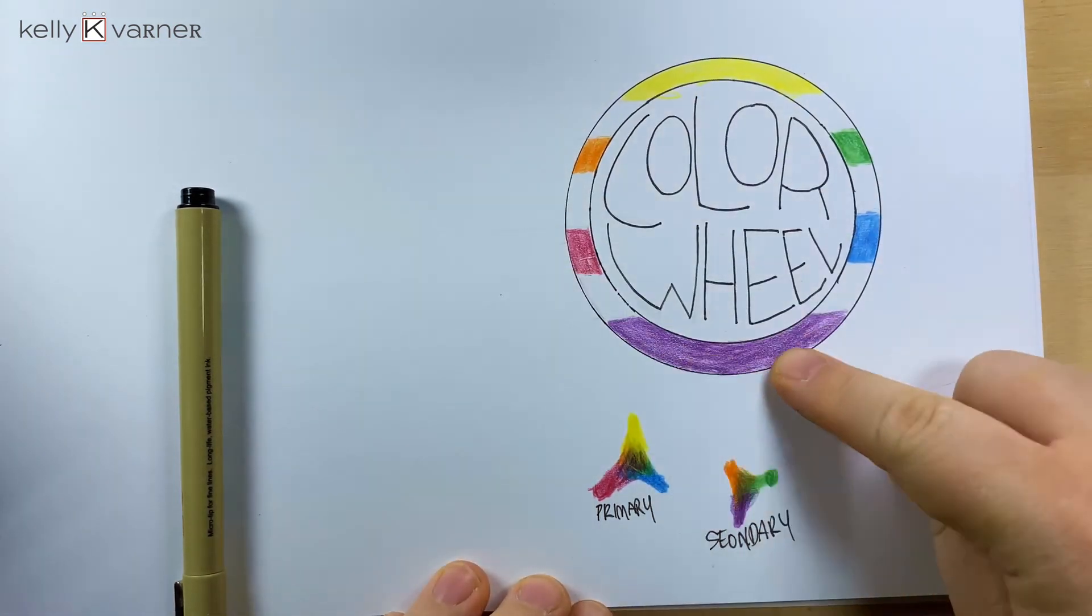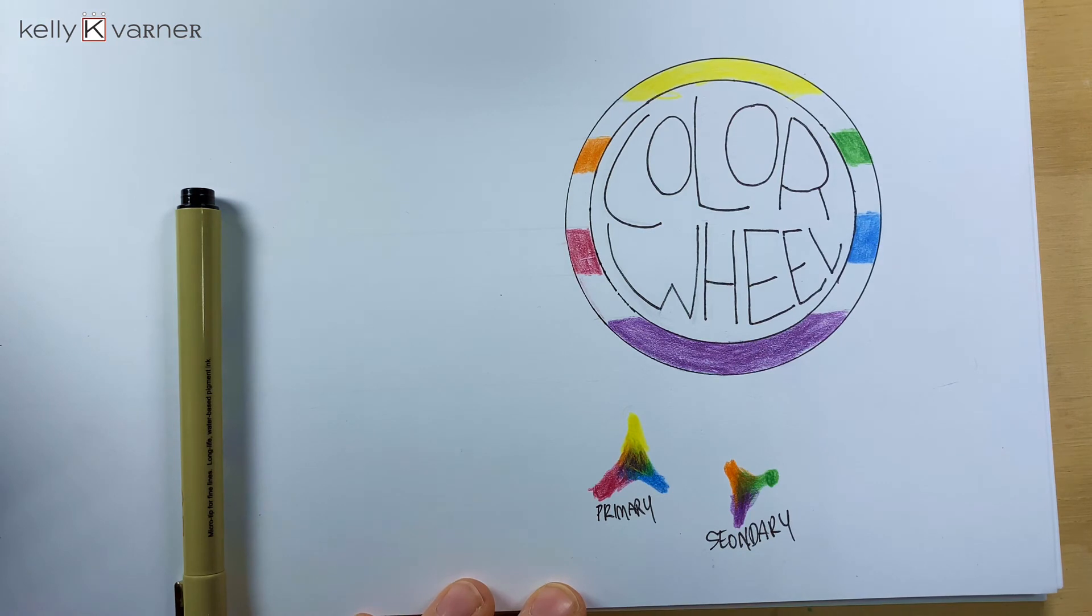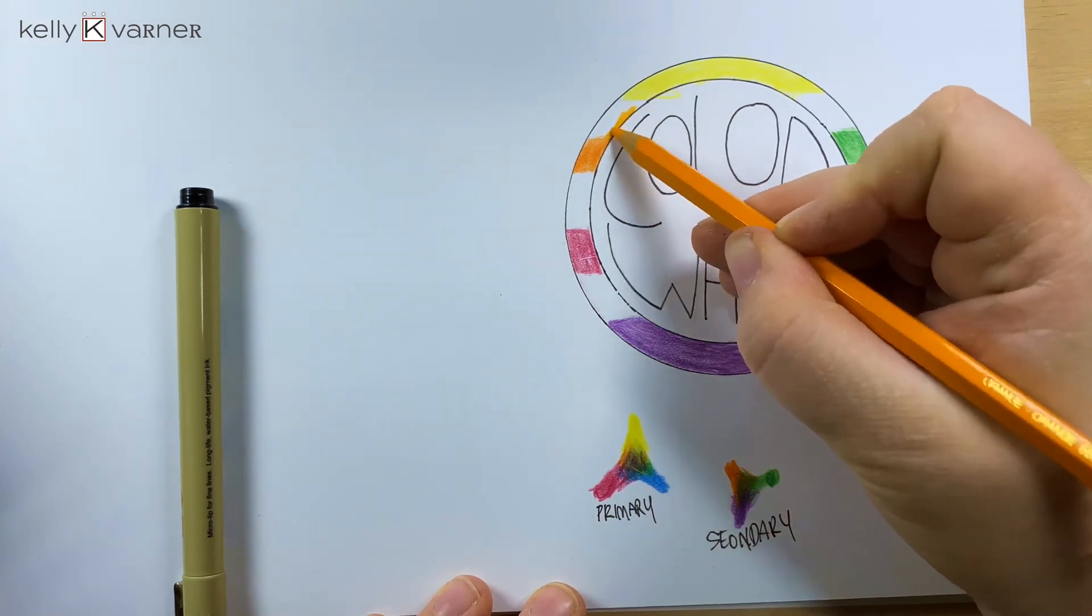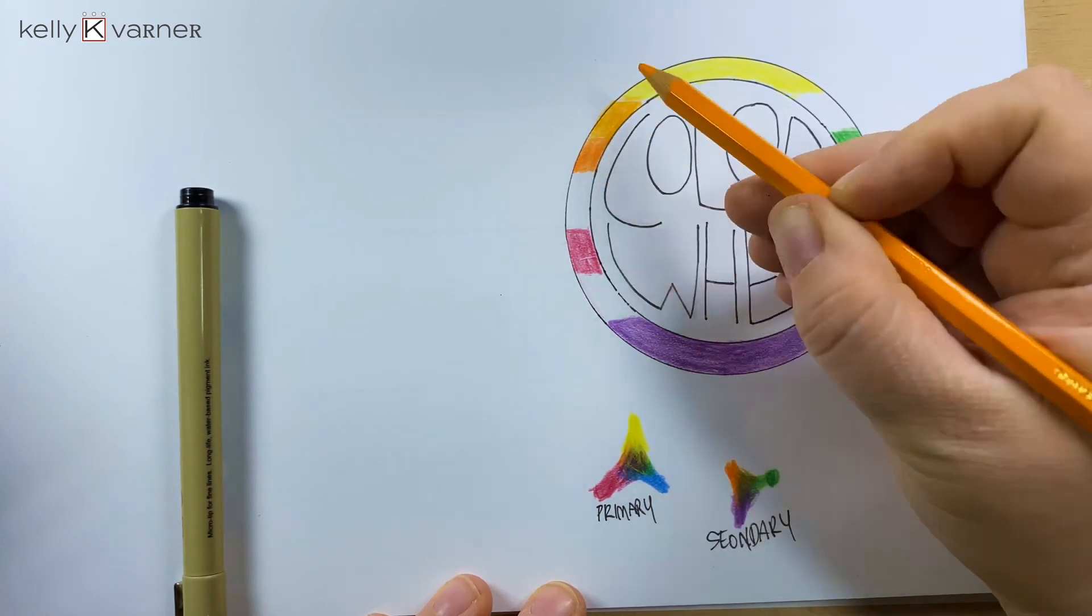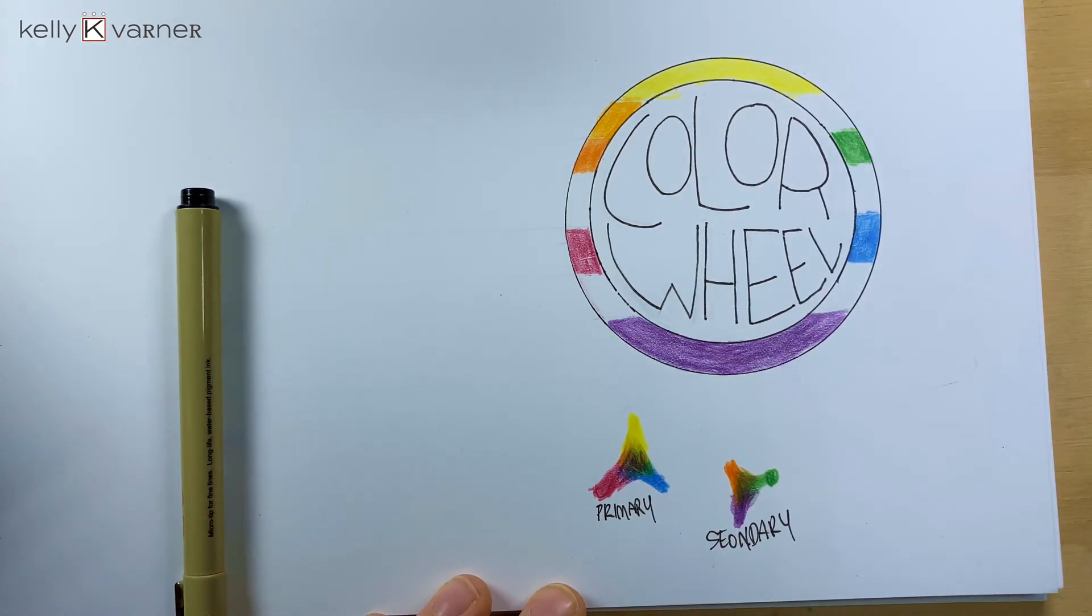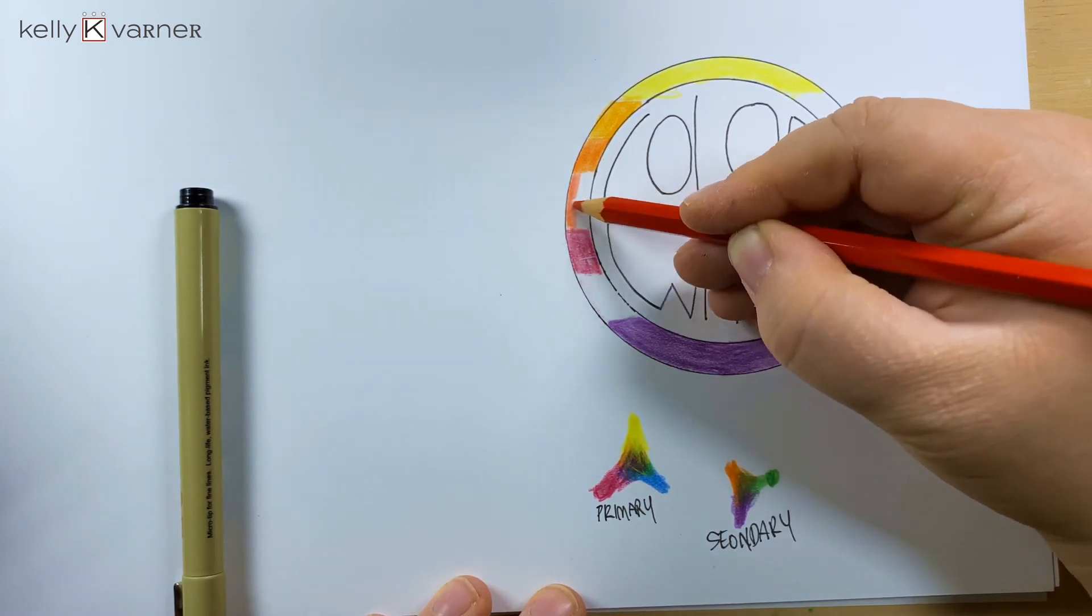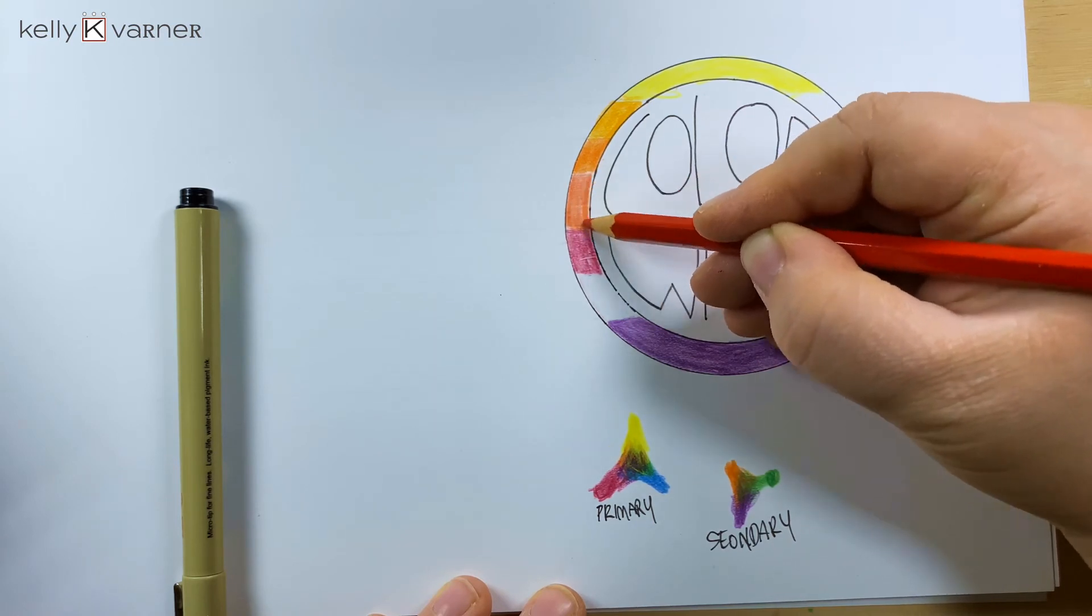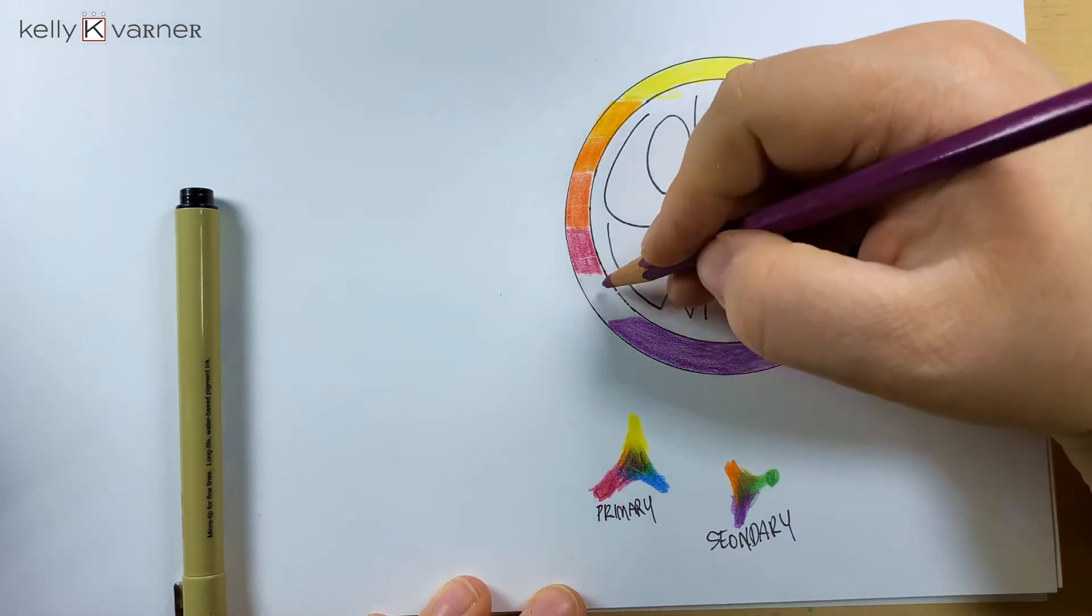And then you have your intermediate colors. Your intermediate colors are going to be a combination of a primary and a secondary. So if you take a yellow and mix an orange, you get a yellow-orange. If you mix orange and red, you're going to get a red-orange. If you mix red and violet, you're going to get a red-violet.